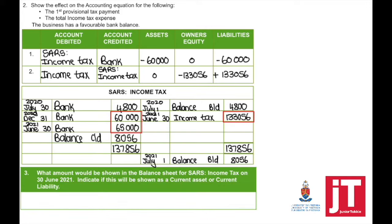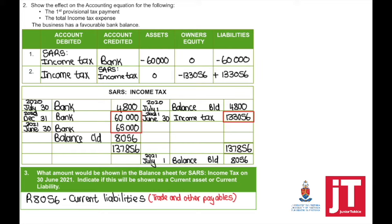Question 3: What amount would be shown in the balance sheet for SARS income tax on 30 June 2021? Indicate if this will be shown as a current asset or current liability. Since we owe SARS $8,056, this will appear in your trade and other payables as a current liability.